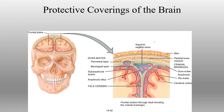Here we can see all the different layers of protection: skin, connective tissue, bone, and then the dura mater. The dura mater has a layer that goes right up against the bone — this is the periosteal layer — and then a layer right next to the arachnoid mater, which is our meningeal layer. The purple layer there is the arachnoid, and the red is our pia mater.